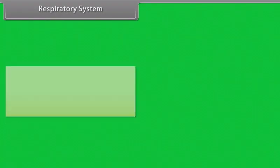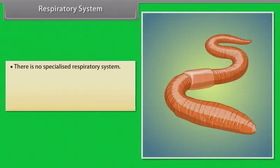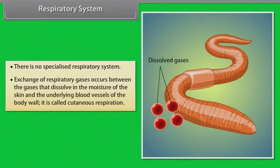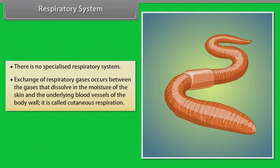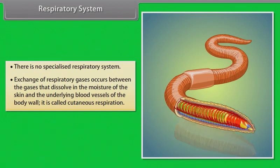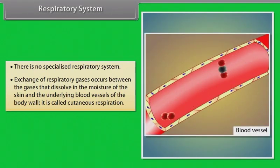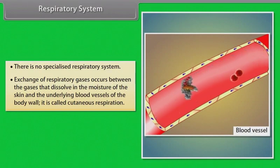Respiratory System. There is no specialized respiratory system in earthworm. Exchange of respiratory gases occurs between the gases that dissolve in the moisture of the skin and the underlying blood vessels of the body wall. This is called cutaneous respiration.